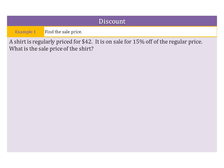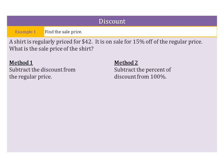If we look at our first example, a shirt is regularly priced for $42. It is on sale for 15% off the regular price. What is the sale price of the shirt? Well, there are two methods we can use to solve. One method is to subtract the discount from the regular price. The other method is to subtract the percent of the discount from 100%, then to multiply.